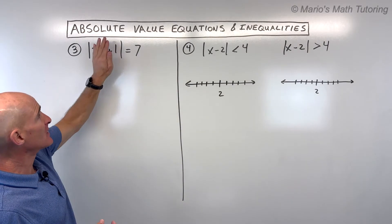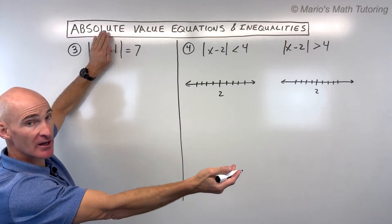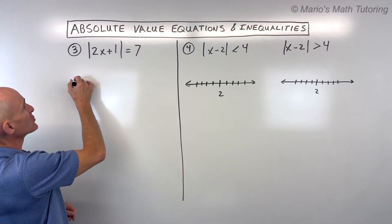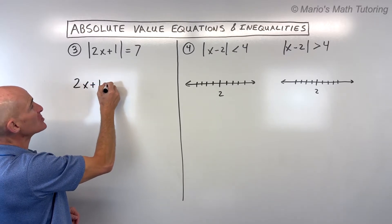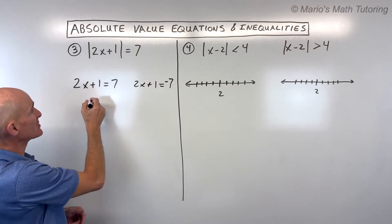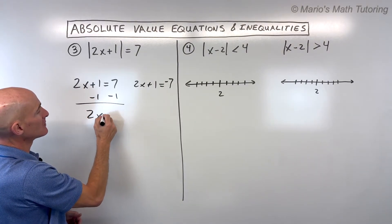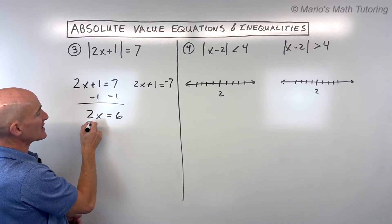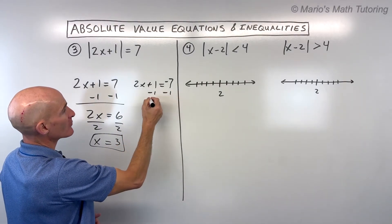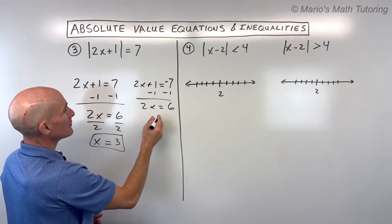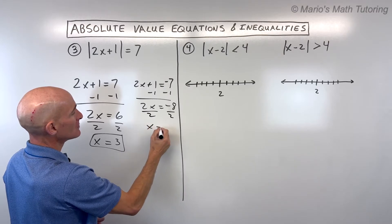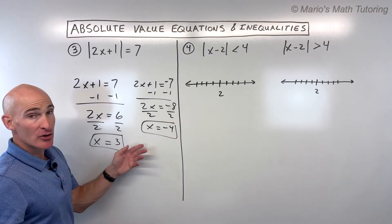So we make two separate equations: 2x plus 1 equals positive seven, and 2x plus 1 equals negative seven. For the first, subtract one from both sides then divide by two. For the second, subtract one from both sides — that gives negative eight — then divide both sides by two. These are our two solutions.